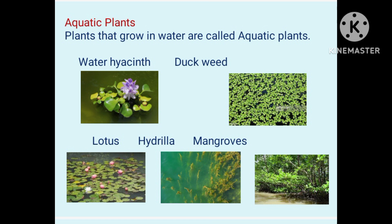Duckweed and water hyacinth float freely on water. Water lily and lotus have roots that fix the plants to the bottom of ponds and lakes. Mangroves grow in marshy or swampy areas.